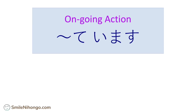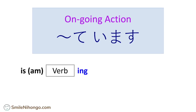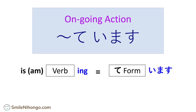To describe ongoing actions in English, they combine 'is' or 'am' and verb plus -ing, right? To do the same thing in Japanese, you have to use the te-form of the verb and add います (imasu). Let me show you some examples.